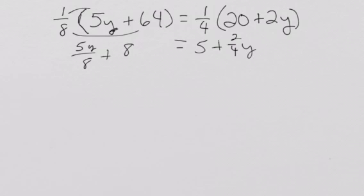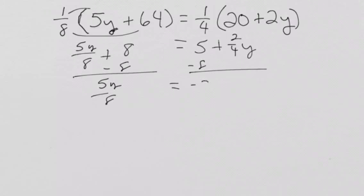All right, so now, what I want to do is work the problem by, let's do some subtracting. Let's subtract our eight from both sides. And we get five y over eight equals negative three plus two-fourths y.